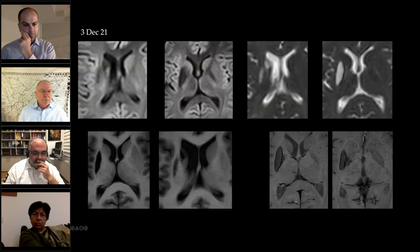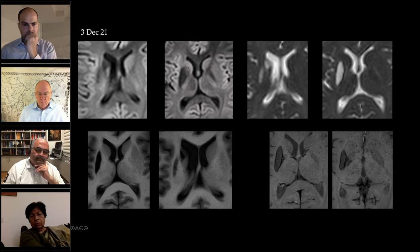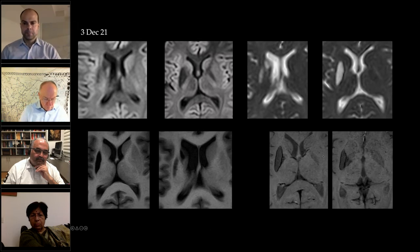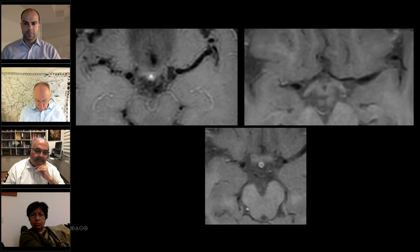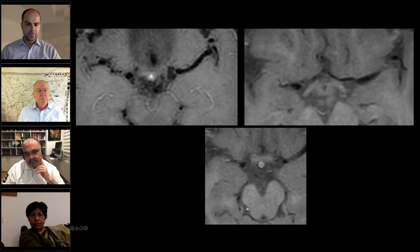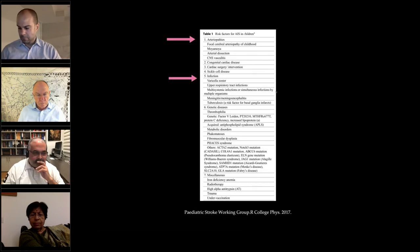Repeat scan on 3rd December: cytotoxic edema has changed to vasogenic edema with volume loss of the right basal ganglia and formation of a cavitary lesion. There is a peripheral rim of hemosiderin blooming on SWI. Vessel wall contrast imaging shows no significant enhancement — the proximal MCA segment is still narrowed with possible collateral formation, but no wall enhancement pattern to suggest vasculitis. Focal cerebral arteriopathy is one possibility. The group opened the case to panelists.